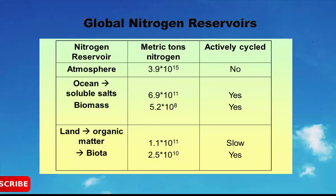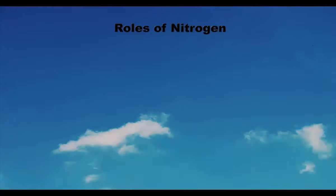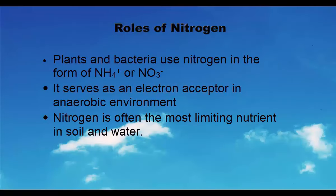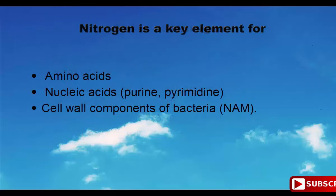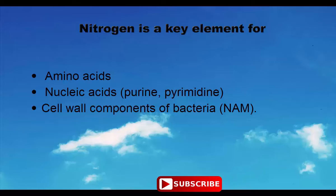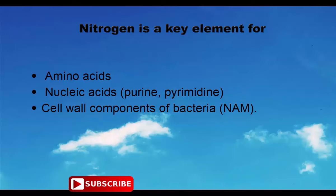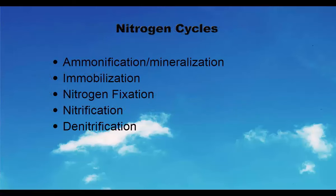Roles of nitrogen: plants and bacteria use nitrogen in the forms of NH4+ or NO3-. It serves as an electron acceptor in anaerobic environments. Nitrogen is often the most limiting nutrient in soil and water, and is a key element for amino acids, nucleic acids, and cell wall components of bacteria.